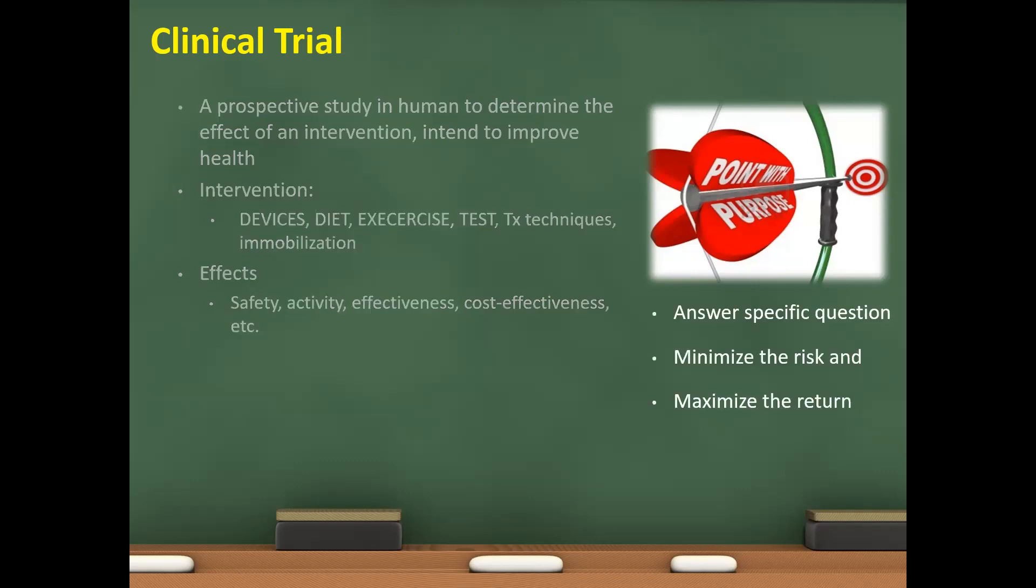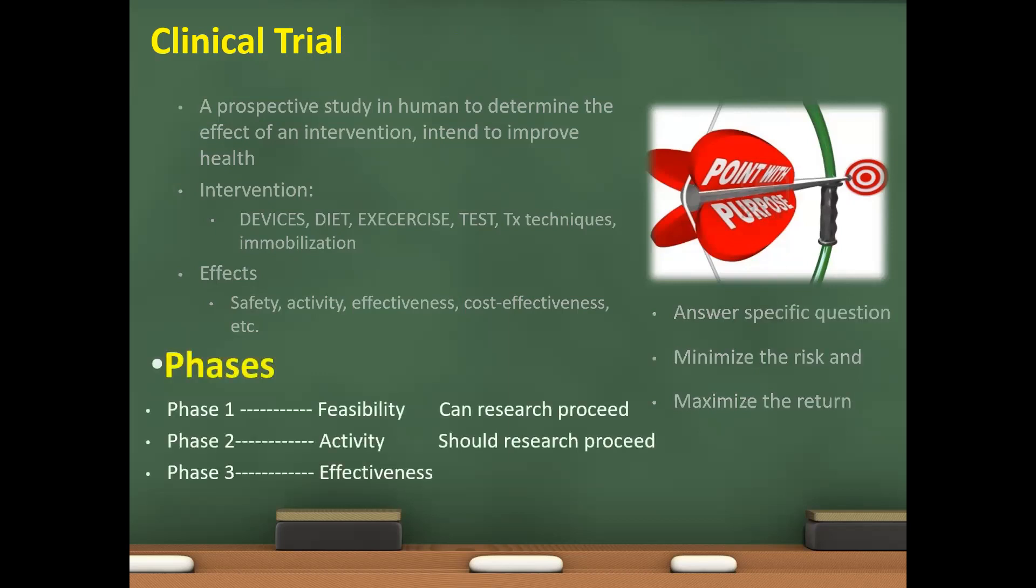So answer the specific question, minimize the risk, and maximize the return. Phases would be the feasibility. Phase one, can research be proceed? Phase two is activity, should research proceed? Phase three is effectiveness.